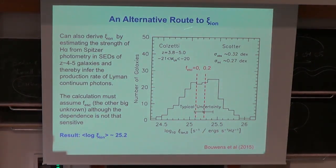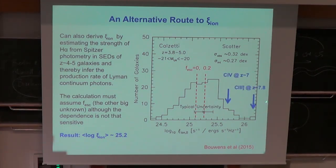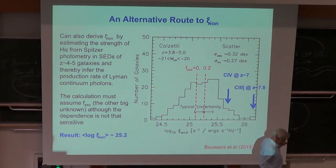There is an alternative route to measuring ξ_ion through the Balmer lines, which are recombination lines. Richard Bouwens took galaxies between redshift 3.8 and 5 and estimated the strength of the Balmer line from Spitzer photometry — we can't see H-alpha beyond redshift 2.5 from the ground. The distribution of ξ_ion values derived shows that our more distant objects lie on the tail, suggesting that as we go to early times the ionizing radiation is definitely harder.